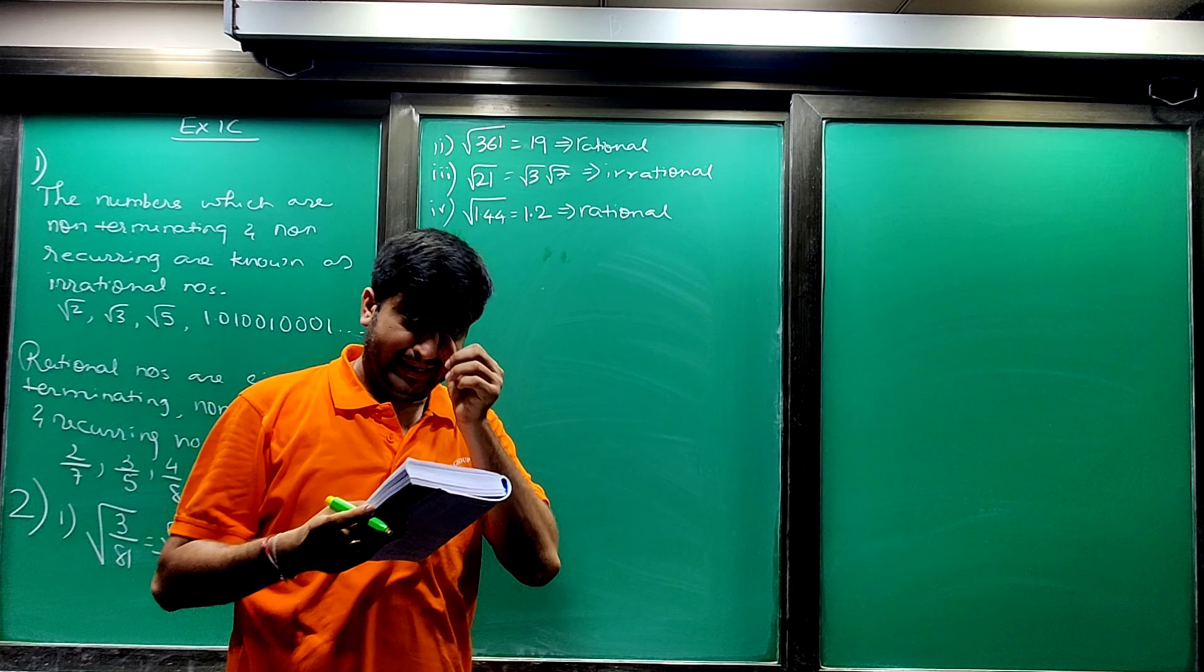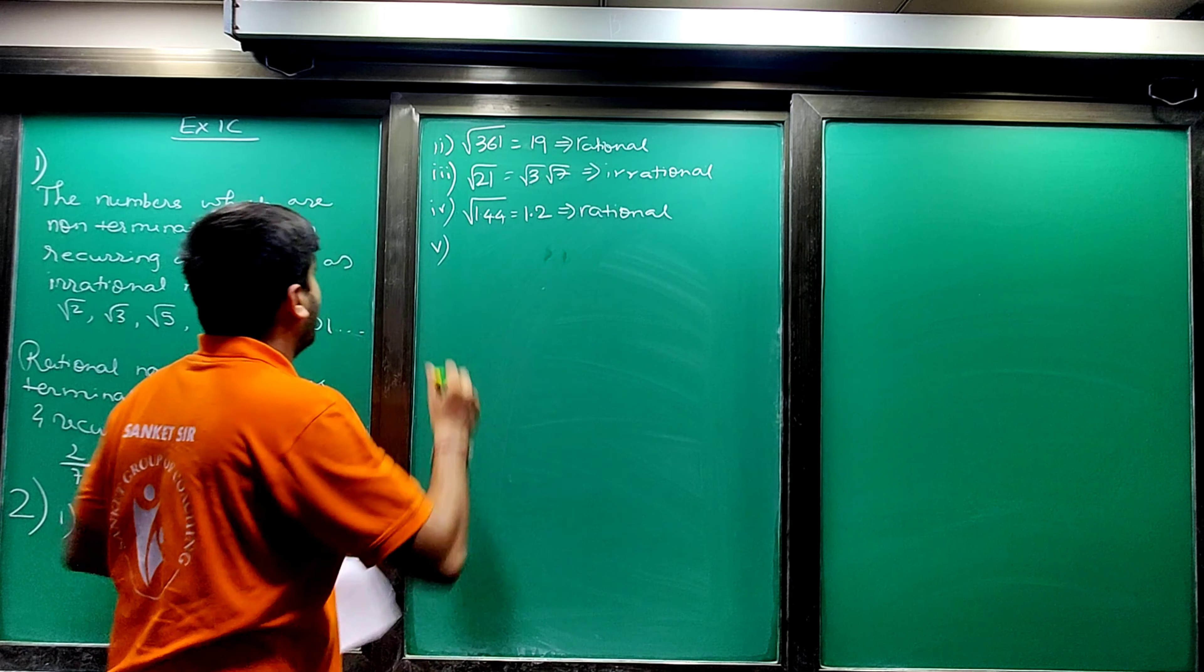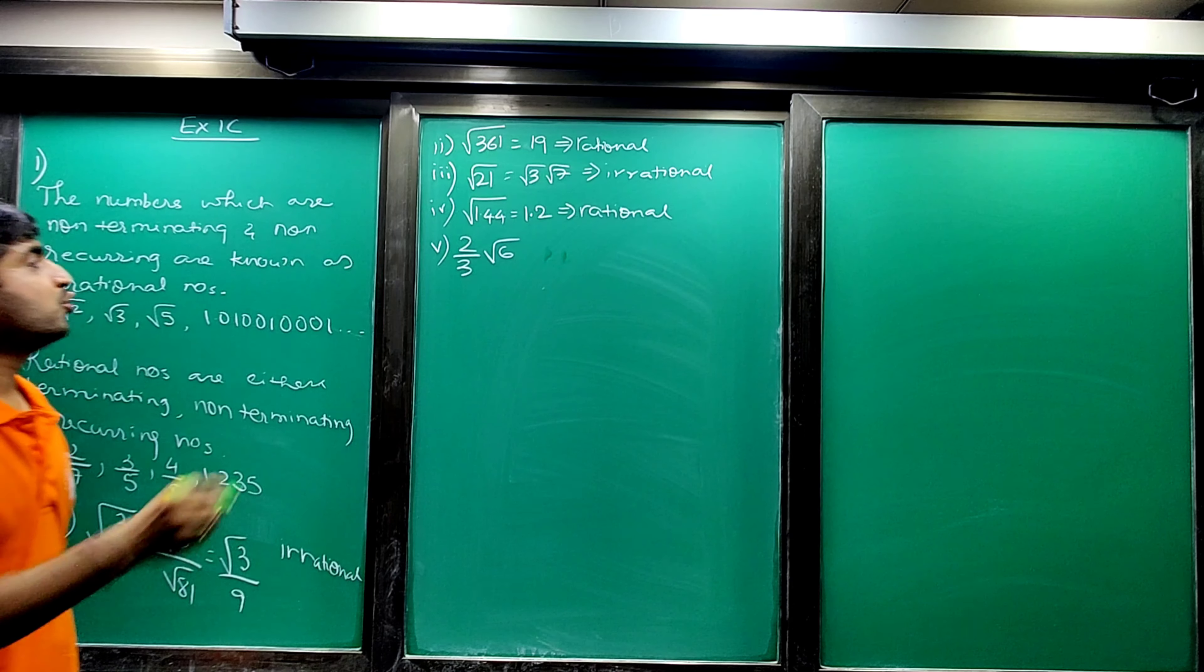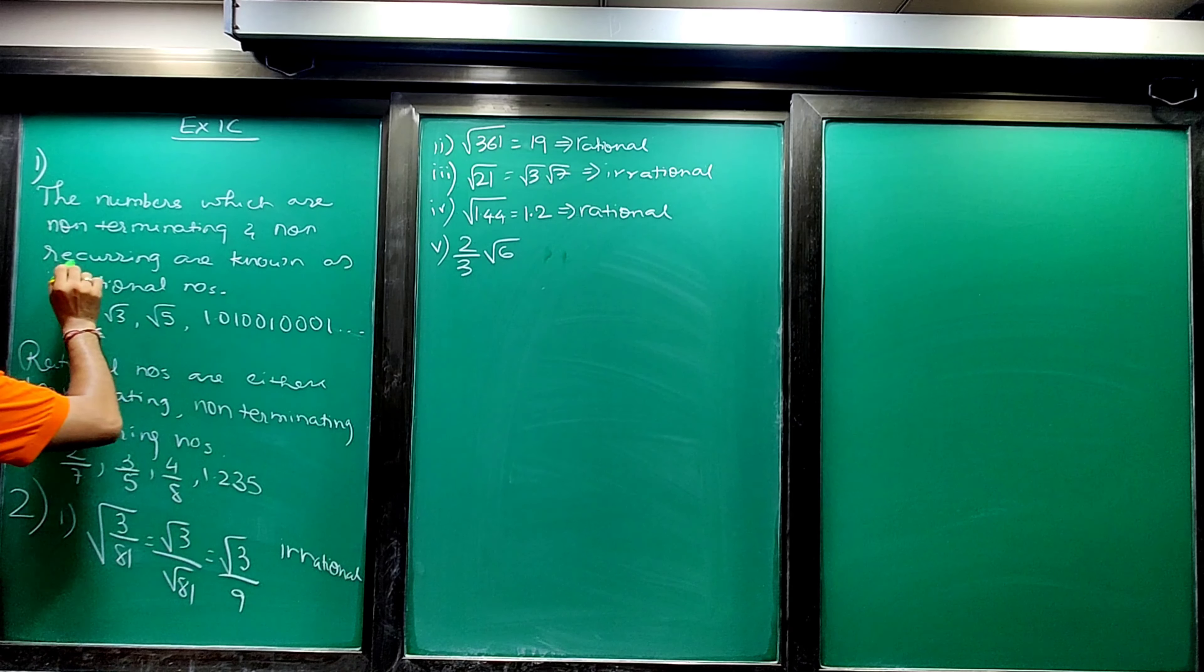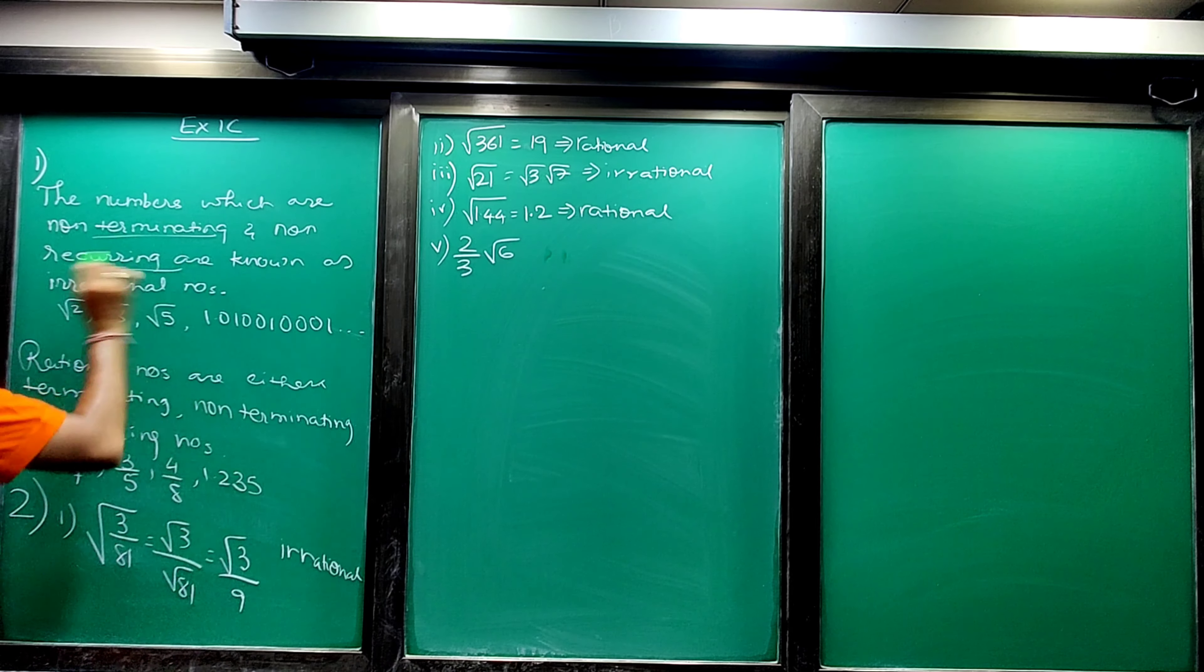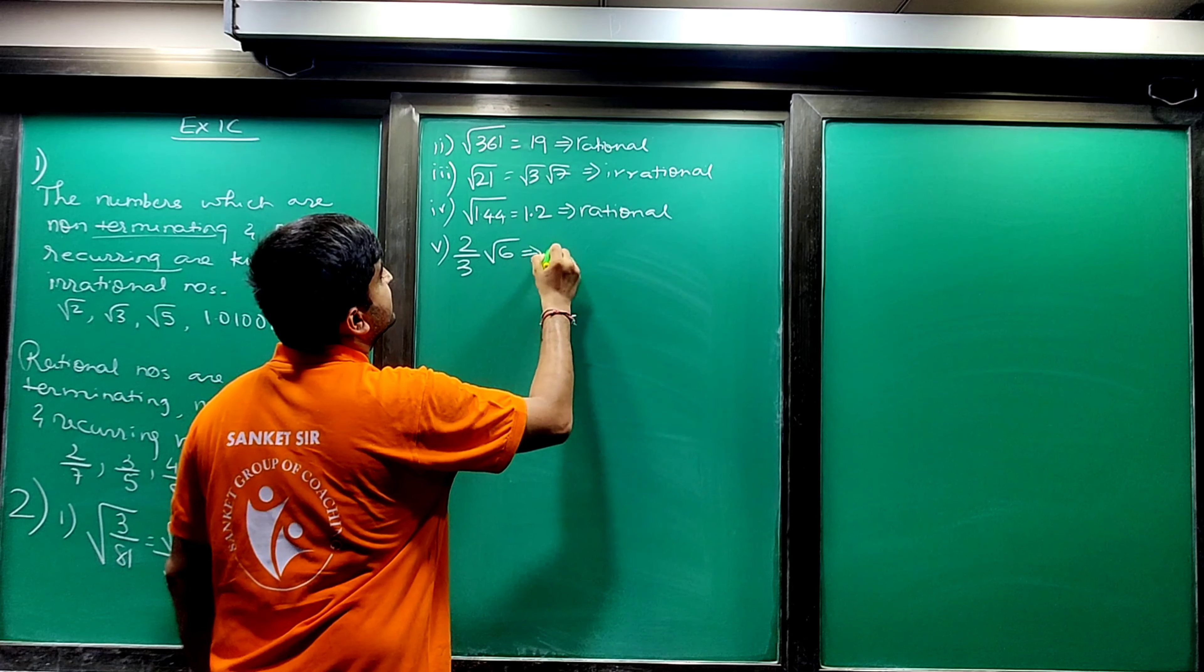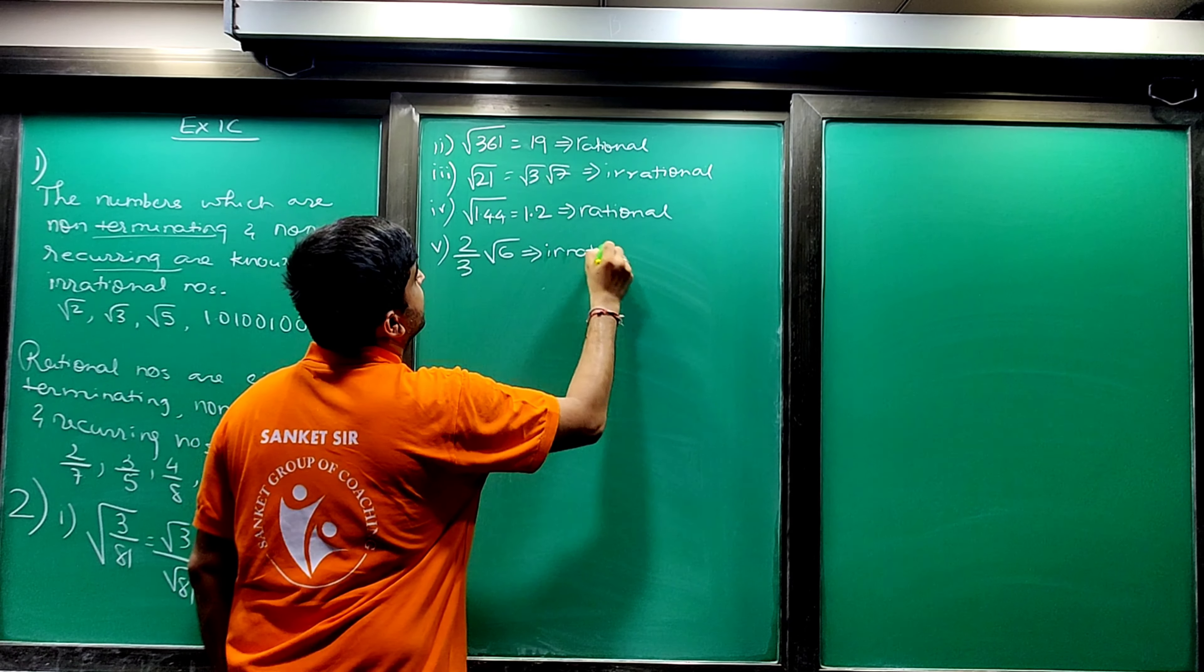Then fifth: under root 6. Now look, multiplication occurred. So root 6 is non-terminating and non-recurring number, and hence it is your irrational number.